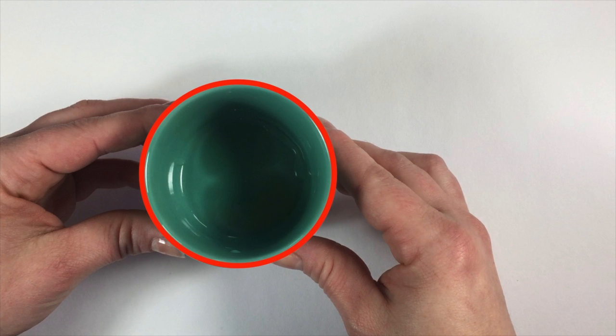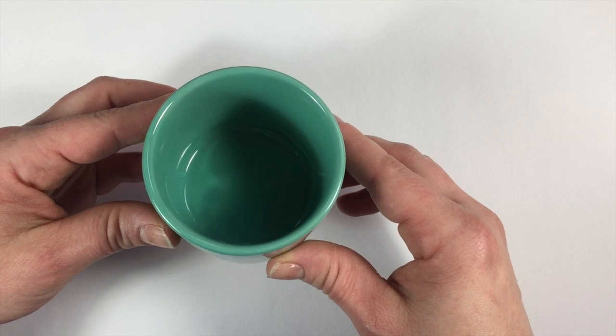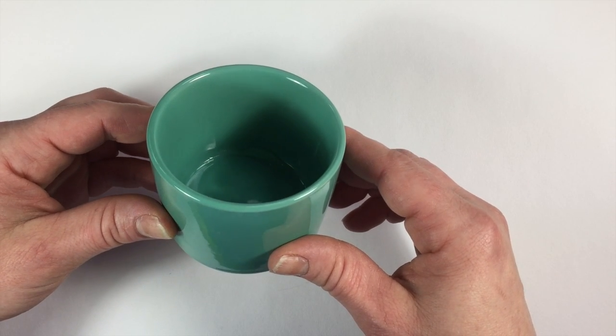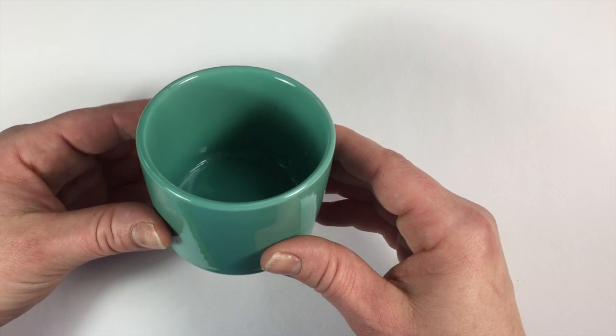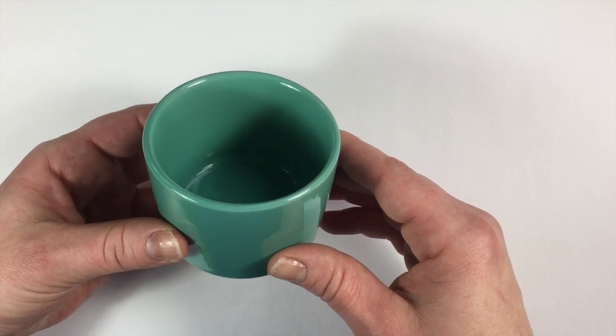From the top, a cylinder would just look like a flat circle. But if we turn it, we can see more dimensions. Now we can see the top and the sides. The shape of the top changes too.